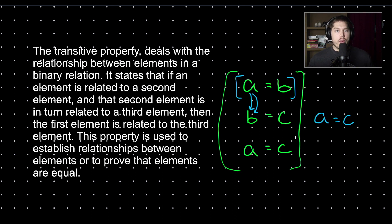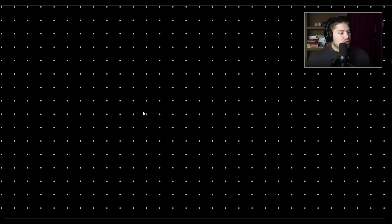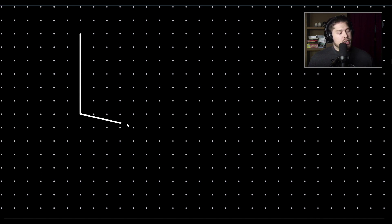Whereas the transitive property already establishes the relationship that A is equal to C because of its very definition: if a first element is related to a second and the second element is related to a third, then the first and the third have that same relationship. So let's solve a quick proof that involves both the substitution property and the transitive property, and let's see if we can highlight the difference a little bit more.